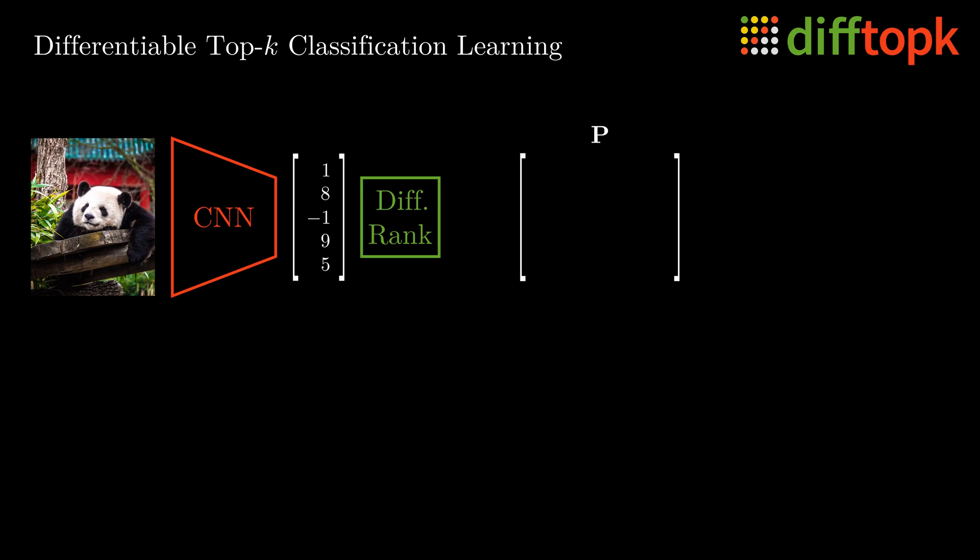Each row of the matrix P corresponds to a respective rank in the ranking of classes, while each column corresponds to a respective class. In this case, the ground truth class is panda, while there are also other classes of airplane, goldfish, mammal, and husky. Note that the class of mammal is also technically correct, as pandas are mammals, however, the ground truth class is panda. Each entry of the matrix corresponds to a respective class being on a respective rank.